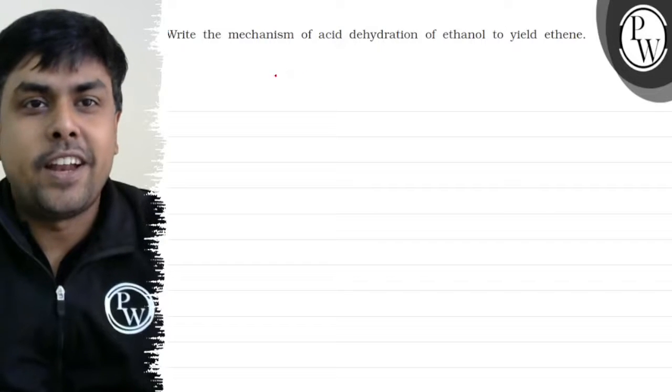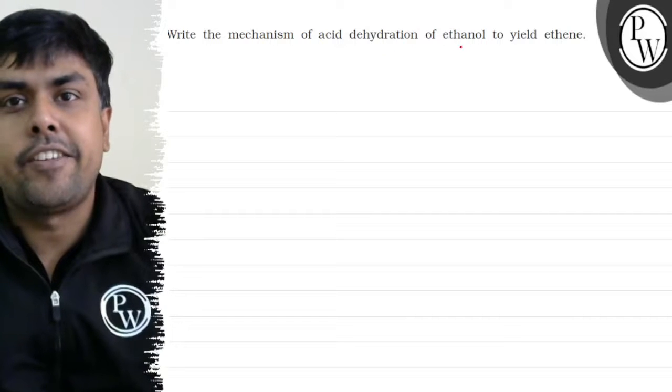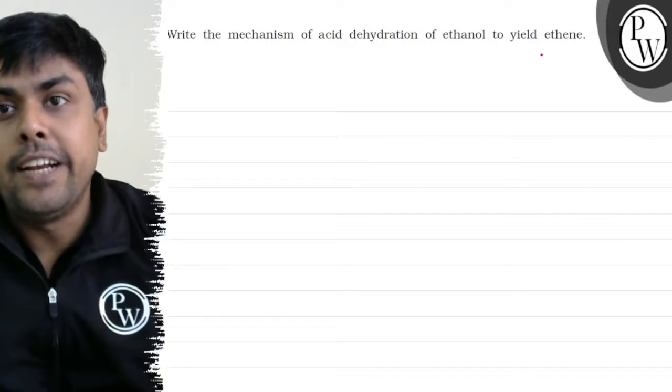Hello, so let's read the question. The question says, write the mechanism of acid dehydration of ethanol to yield ethene.